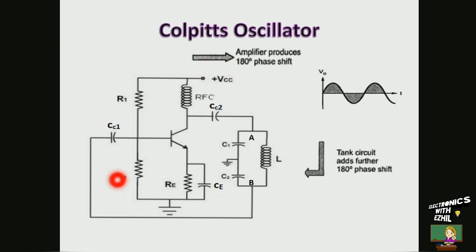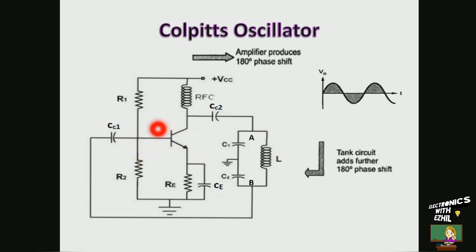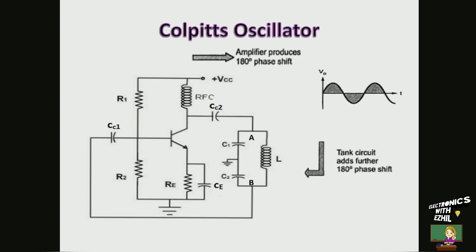Colpitts oscillator consists of the amplifier stage and feedback network or frequency determining network. An LC tank circuit forms the feedback network, which is also called as tuned circuit or resonating circuit. Colpitts oscillator has two capacitors and one inductor in its feedback network. The amplifier stage uses a transistor as an active device in common emitter configuration. The potential divider resistors R1, R2 and emitter resistor RE provide necessary biasing so that the transistor can operate in its active region to amplify the signal properly.